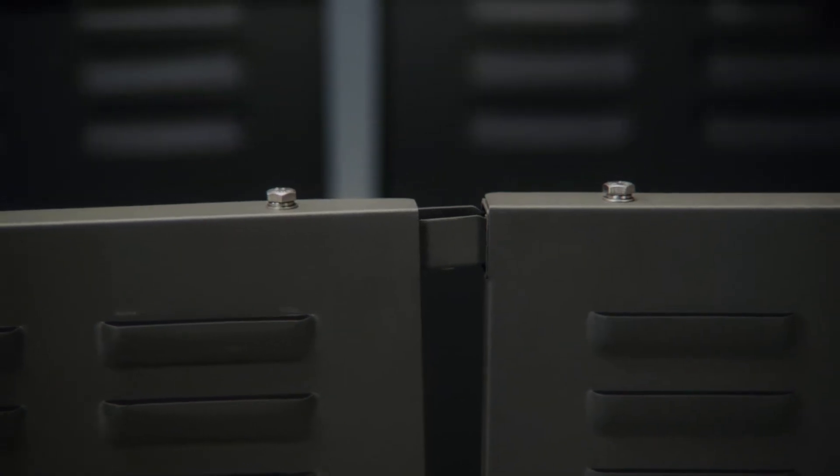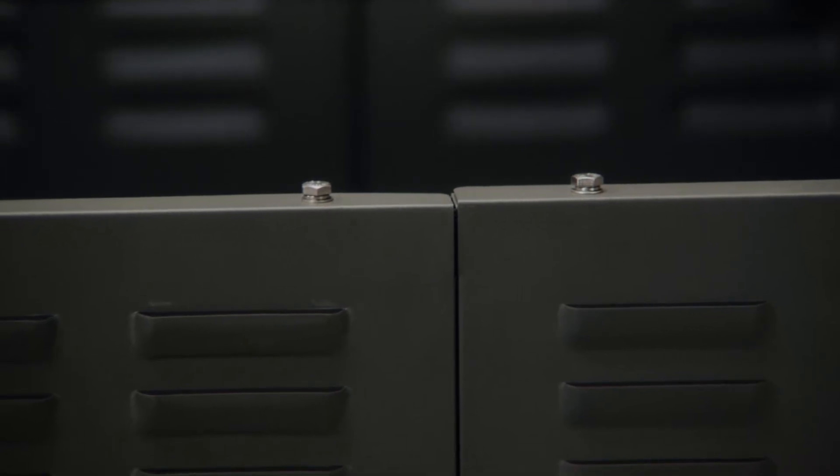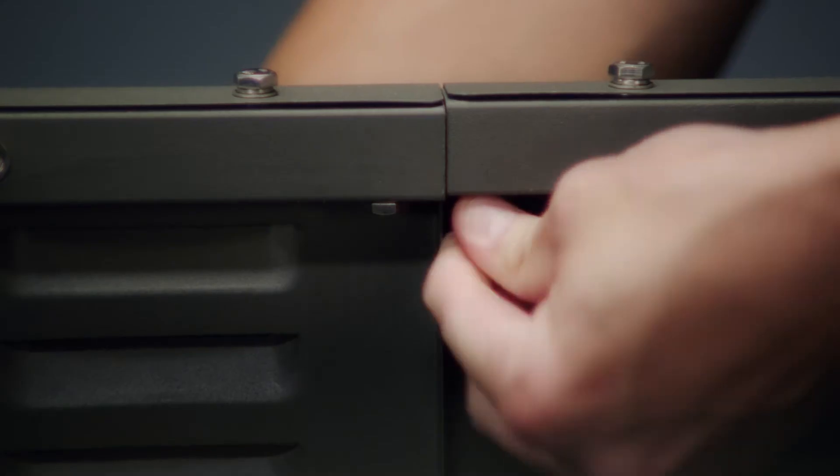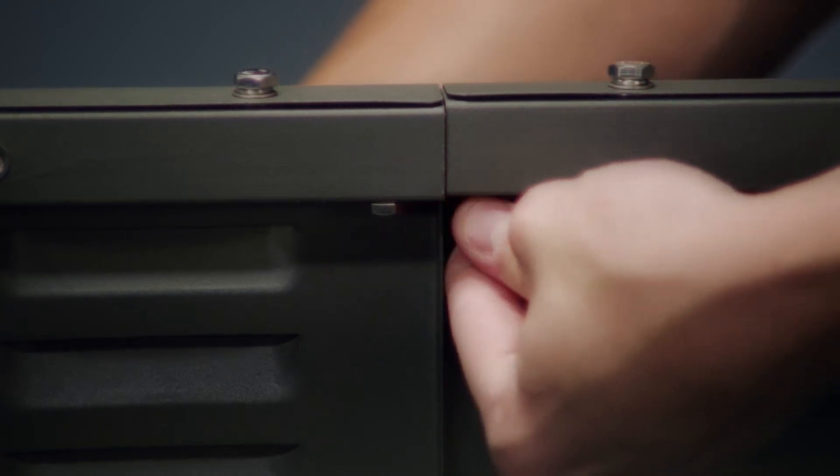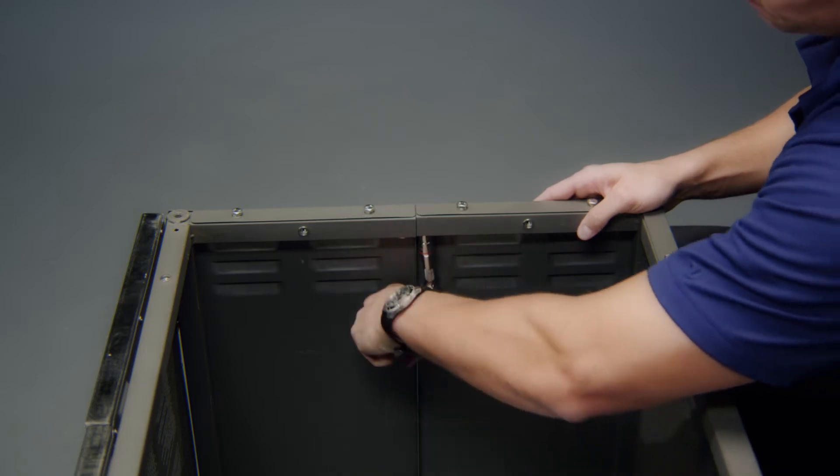Next, slide the rear half of the cart toward the front half to engage the cart connectors with the cart rear half tubing and secure in 4 places using the 1/4-25 inch bolts and 1/4 inch washers. Tighten all bolts securely.